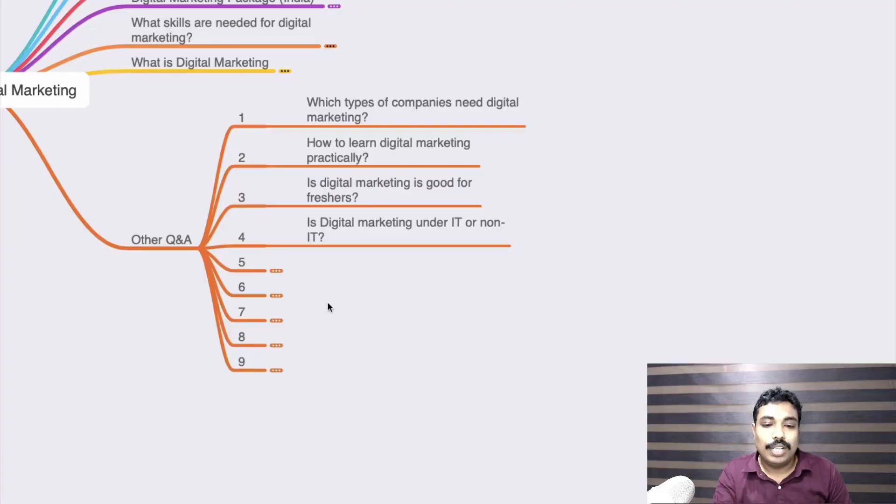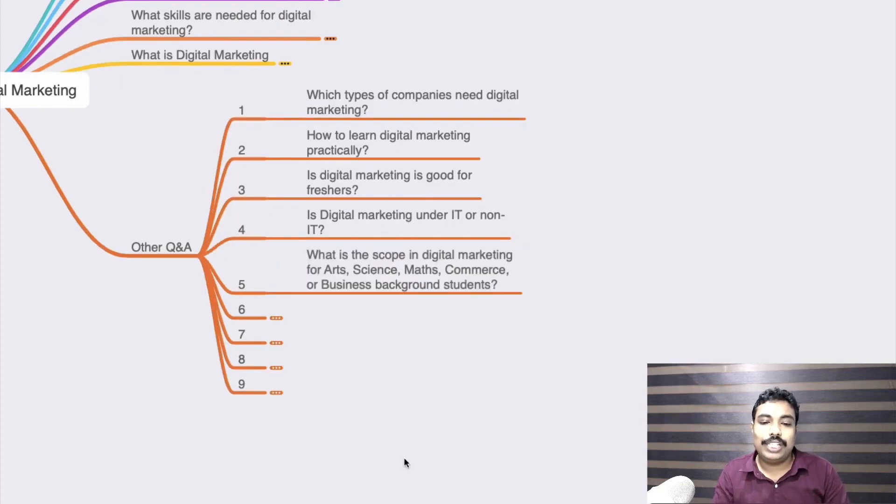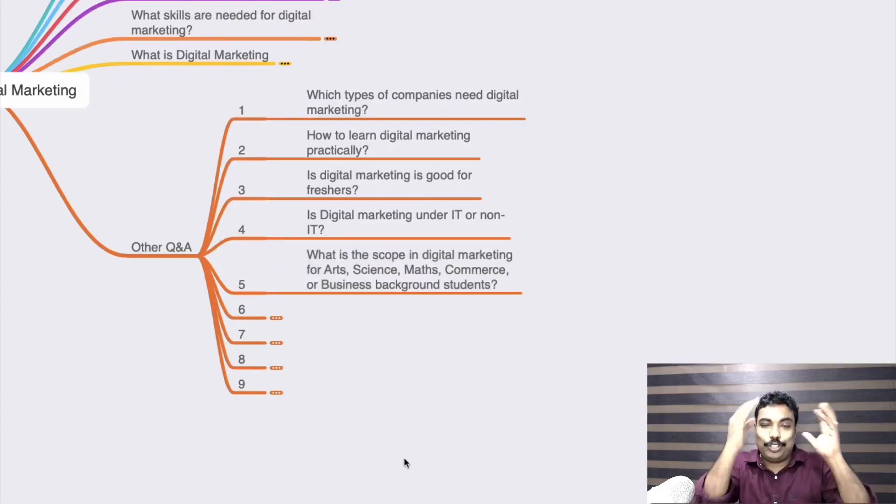If you ask me, digital marketing is a mix of IT and non-IT. Most of the coding comes with the SEO part — SEO is the section where coding is mostly required. The rest are software tool-based sections. So the next question is: what is the scope of digital marketing?